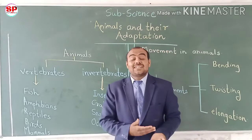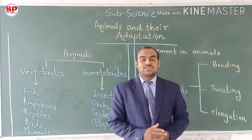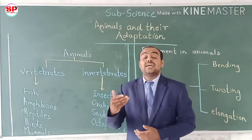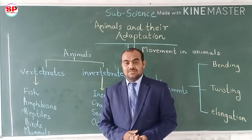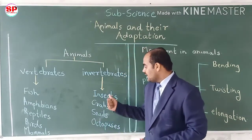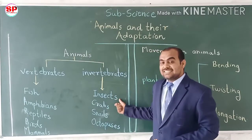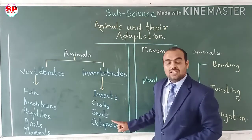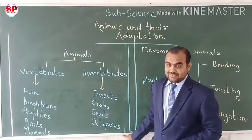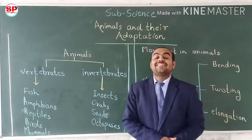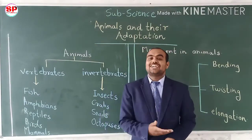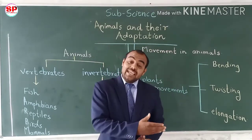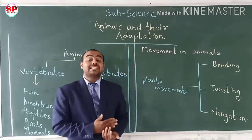Animals not having backbones are called invertebrate animals. Examples include insects, crabs, snails, and octopus. These all do not have backbones, so that is why they are called invertebrate animals.